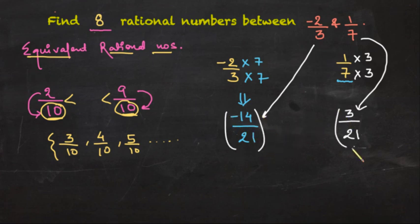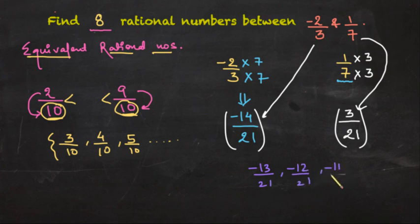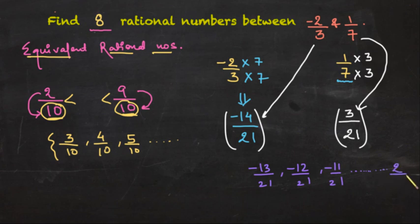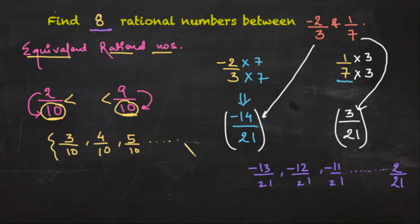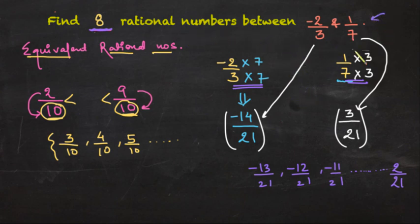Now let's write down some rational numbers which lie between negative 14 by 21 and 3 upon 21. The numbers can be: negative 13 upon 21, negative 12 upon 21, negative 11 upon 21, negative 10 upon 21, negative 9 upon 21, 0 upon 21, all the way up to 2 upon 21. We have found more than eight rational numbers, so you can pick any eight and that would be the correct answer. The core idea is to get the same denominator, and once you can do this, you can find any number of rational numbers between any two given rational numbers.